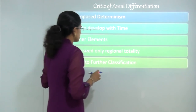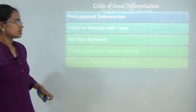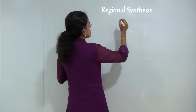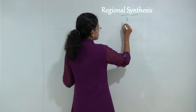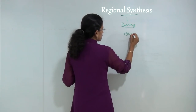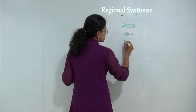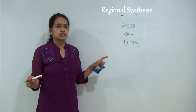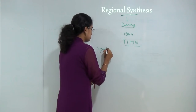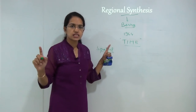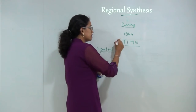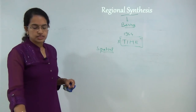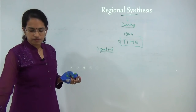As a result, a new theory came in which was known as regional synthesis. Regional synthesis theory had its origin from the concept of region and regional geography. The main proponent of regional synthesis theory was Berry, who in 1964 gave an important aspect, and that was time. He said if we are doing any study which is spatial in nature, we cannot ignore the concept of time. Under his concept of regional synthesis, he tried to incorporate the concept of time.